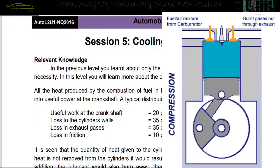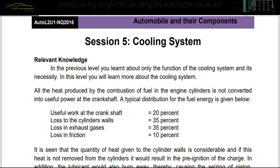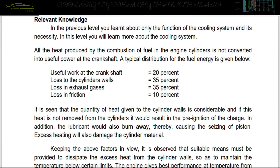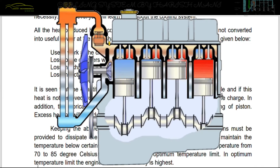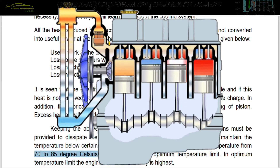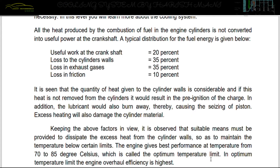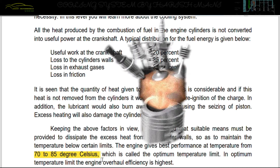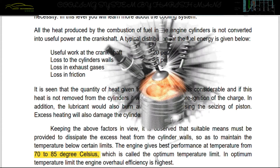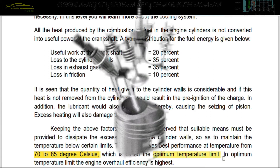But our engine operates only at 70 to 85 degrees Celsius. This is the optimum temperature. Our body temperature is at 37 degrees Celsius — that is the normal temperature. More than that is dangerous. So we maintain the engine at 70 to 85 degrees Celsius. This is the optimum temperature; going below it is the minimum dangerous range.